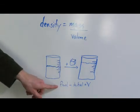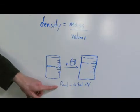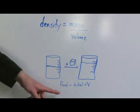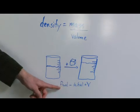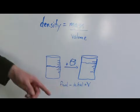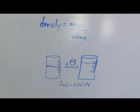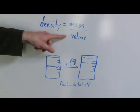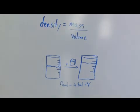In order to find your volume from this, you take that final reading and subtract the initial reading. You're going to get a number that is the volume of liquid displaced. Then all you have to do is divide your mass by your volume.